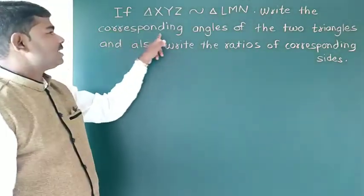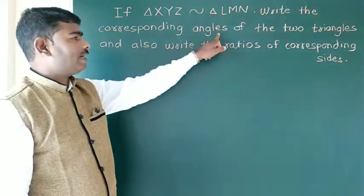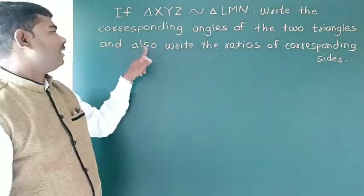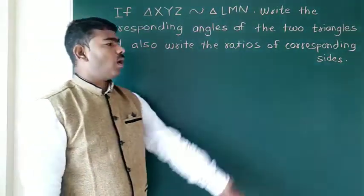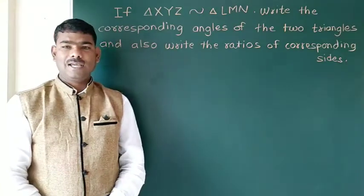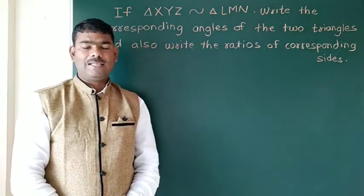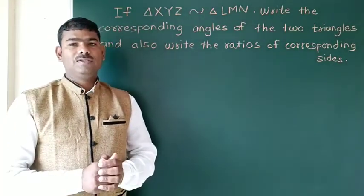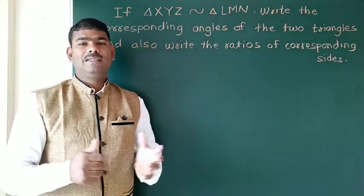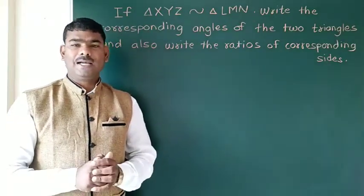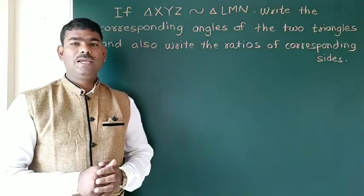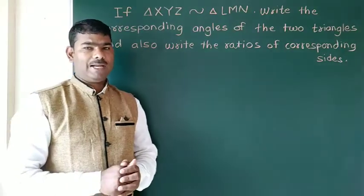Write the corresponding angles of the two triangles and also write the ratio of corresponding sides. Those triangles are similar. The two triangles are similar, and according to the corresponding sides, the corresponding angles will be the same.